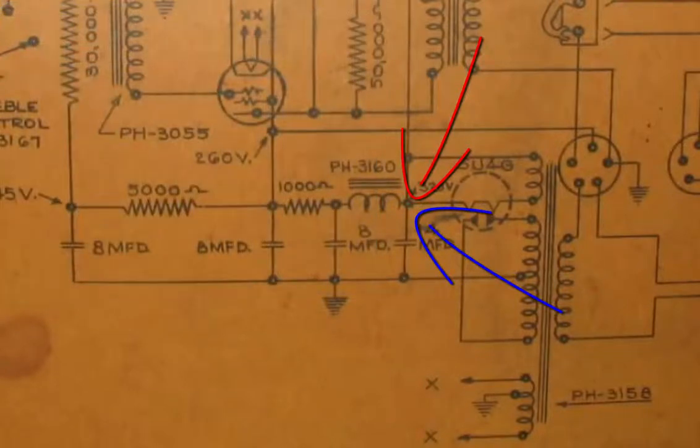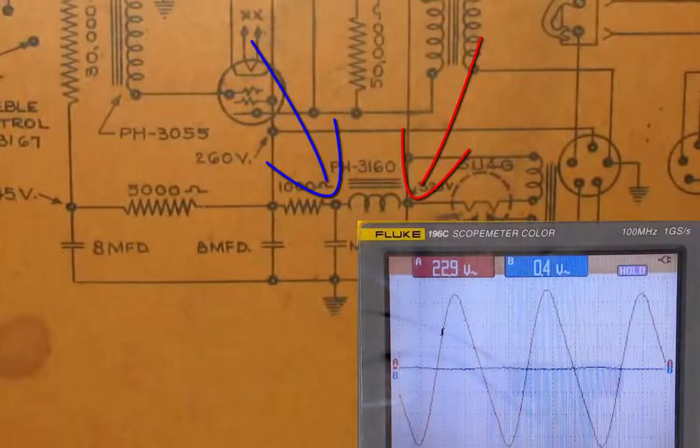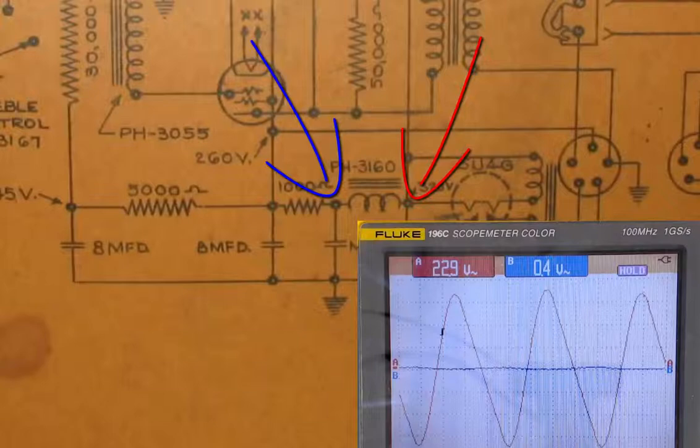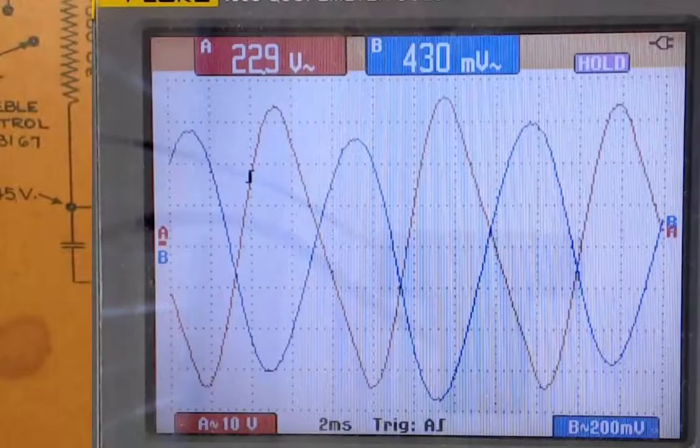Okay, then if we move over one on channel B, I'm going to leave channel A where it is. We can see that the ripple has been significantly attenuated. It's down to 400 millivolt ripple in the blue, and if we zoom in a little bit we can actually look at it here a little better. It's 430 millivolts.